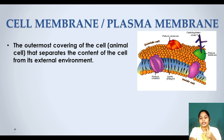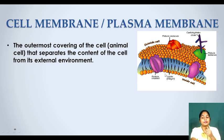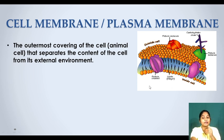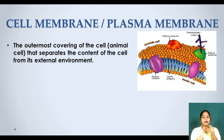Look at the diagram of the cell membrane. It has two layers of lipids — that's why it is called a lipid bilayer. Between the lipid layers there are protein molecules. So the cell membrane is made up of lipids and proteins together, which we call lipoproteins.